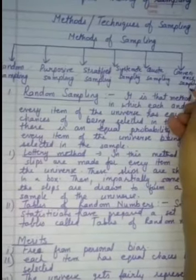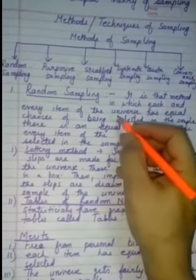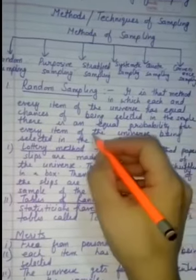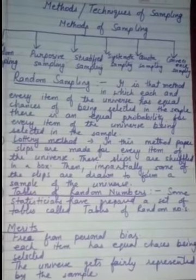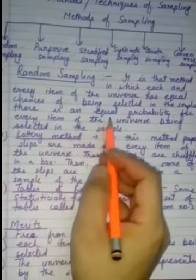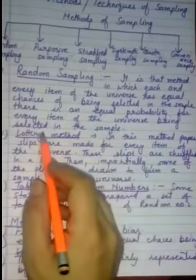First, random sampling. Random sampling is that method in which each and every item of the universe has an equal chance of being selected in a sample. Every item in the population has an equal probability of being selected.